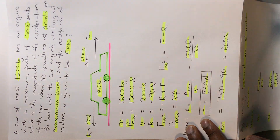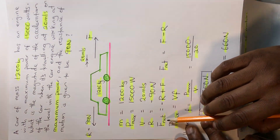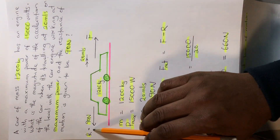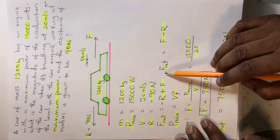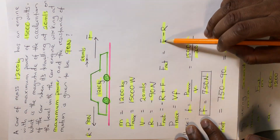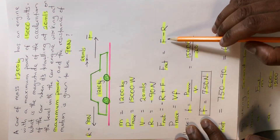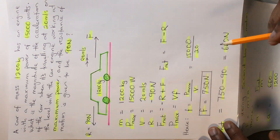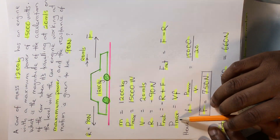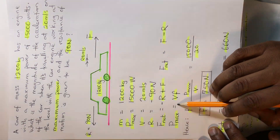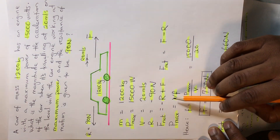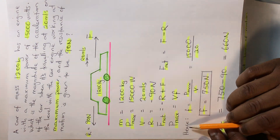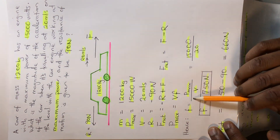Our net force — that is, total force — equals minus R plus F. Therefore, the total net force equals driving force minus resistance: F_net = F − R. Now, maximum power P_max equals the product of speed and driving force, so that F equals P_max over V.